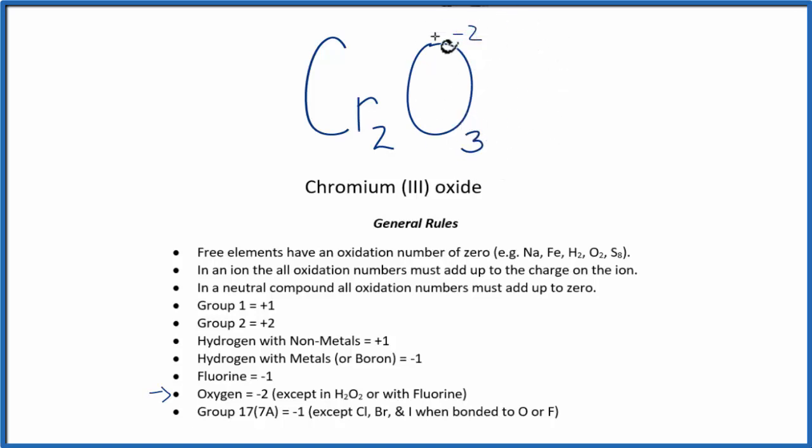So if we add all the oxygens up, we have a minus 6. Chromium, you're not going to see it on this list here. We're going to have to use this information and this subscript here to figure out what the oxidation number is for each chromium.